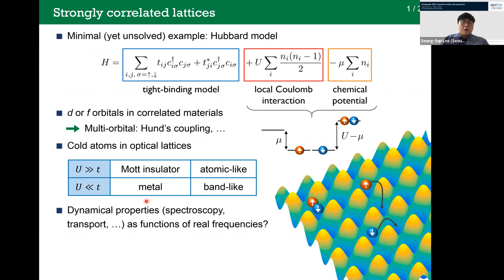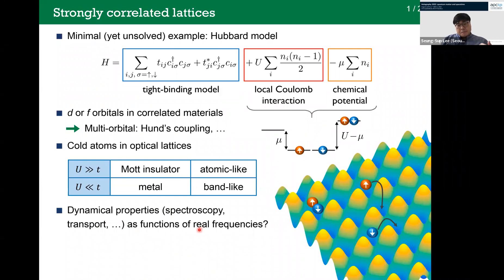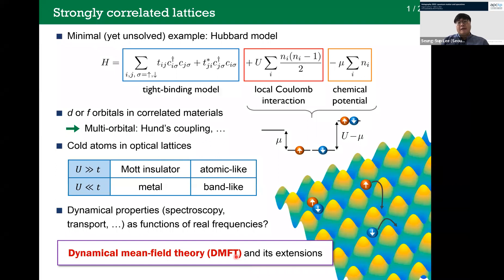To compare with experiments, as a theorist, we want to compute dynamical properties — properties that depend on frequencies and energies. They correspond to measurements in spectroscopy or transport experiments, and we want to obtain them as functions of real frequencies. We want to treat the competition between atomic-like versus band-like nature of electrons and also compute dynamical properties. So there are several numerical methods for doing that, but here I will focus on dynamical mean field theory, DMFT, and its extensions.